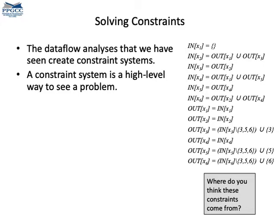The results of these constraints are sets. The in and out sets, I mean. We have 12 such sets, and we need to find elements for them, so that all the equations are true. About these equations, do you know from which analysis they came from? I will leave this question as an exercise, but I will provide an answer very shortly.